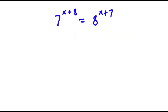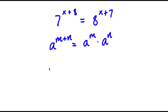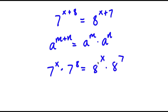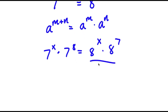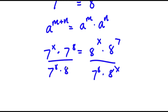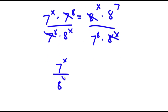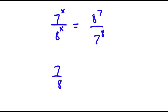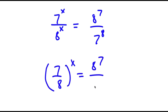In this problem I have 7 to the power of x plus 8 is equal to 8 to the power of x plus 7. To start, if I have something in the form a to the power of m plus n, this equals a to the power of m times a to the power of n. So 7 to the power of x plus 8 equals 7 to the power of x times 7 to the power of 8, and 8 to the power of x plus 7 equals 8 to the power of x times 8 to the power of 7. Now I'm going to divide both sides by 7 to the power of 8 times 8 to the power of x, so these cancel out and I'm left with 7 to the power of x over 8 to the power of x is equal to 8 to the power of 7 over 7 to the power of 8. This is the same thing as (7/8) to the power of x equals 8 to the power of 7 over 7 to the power of 8.